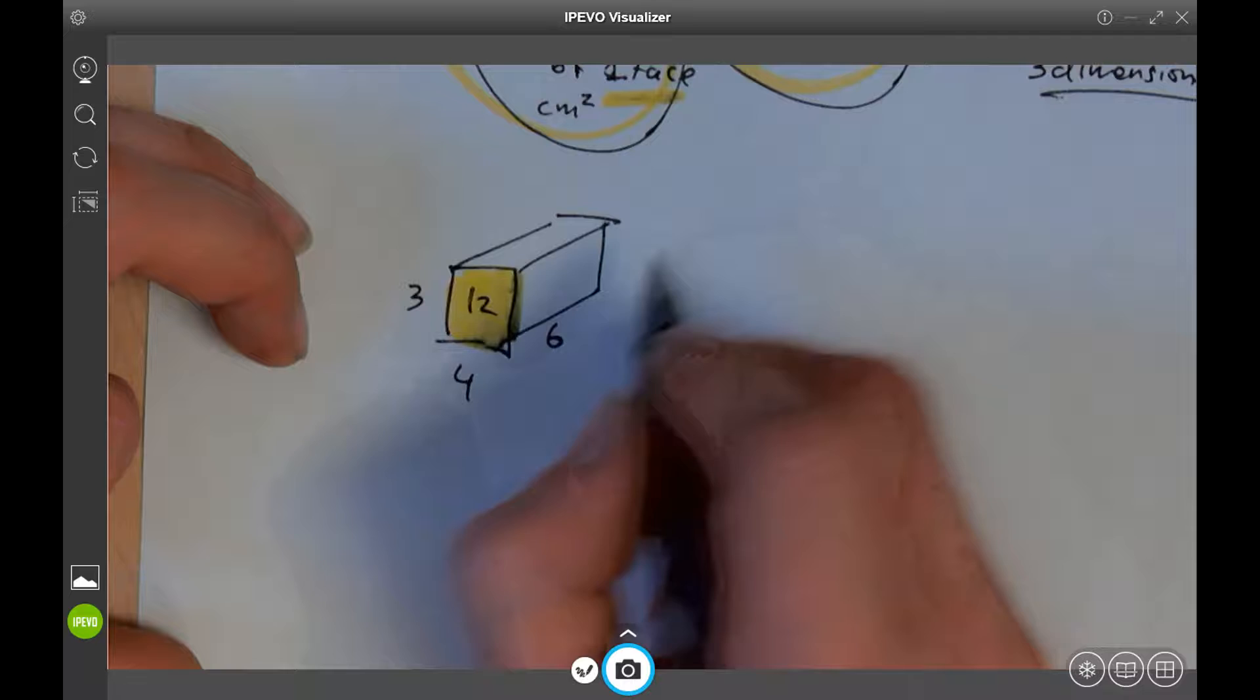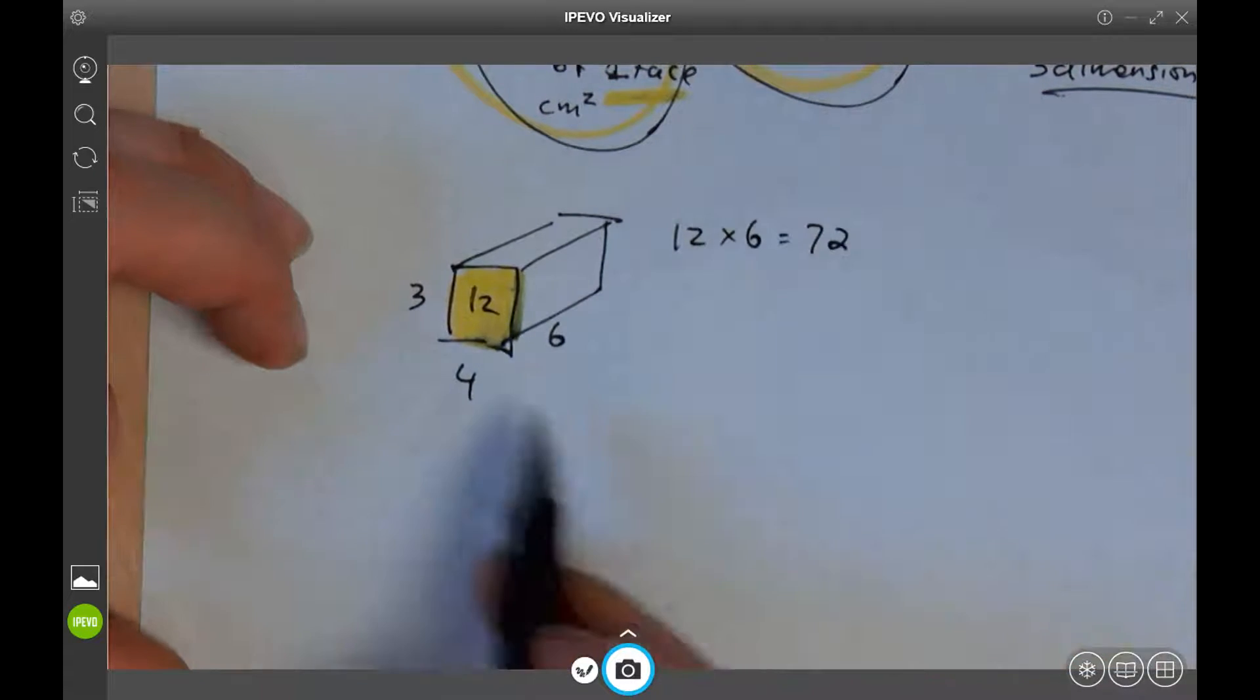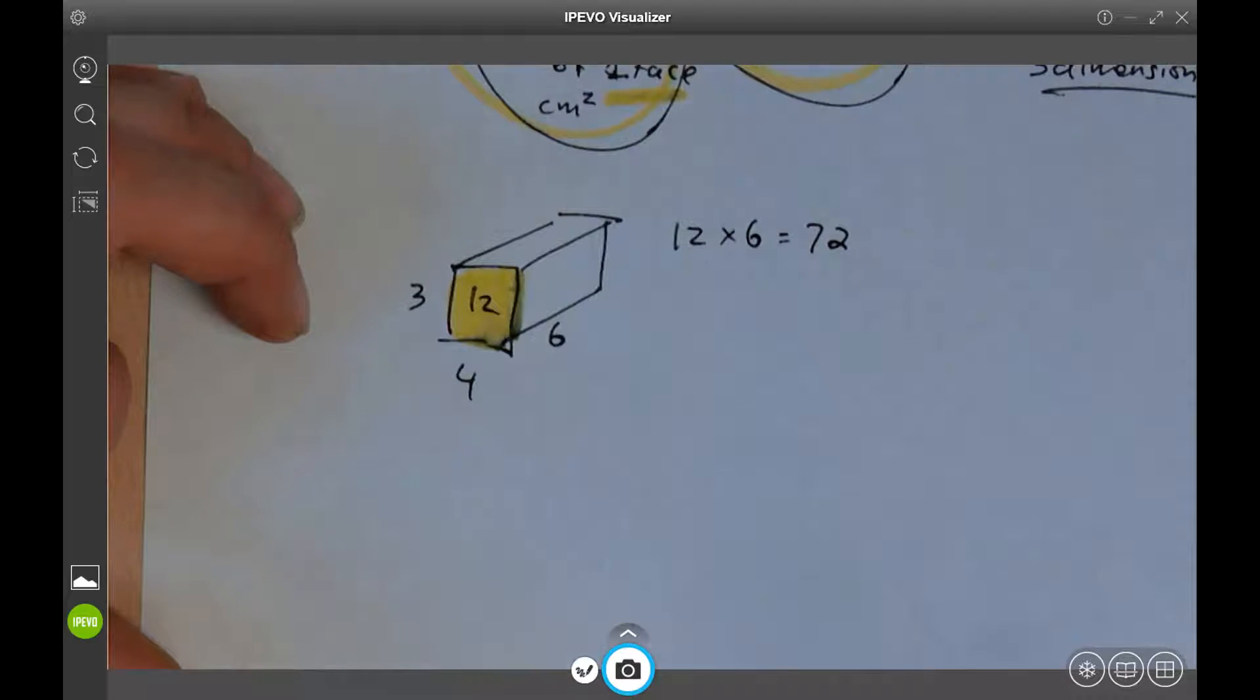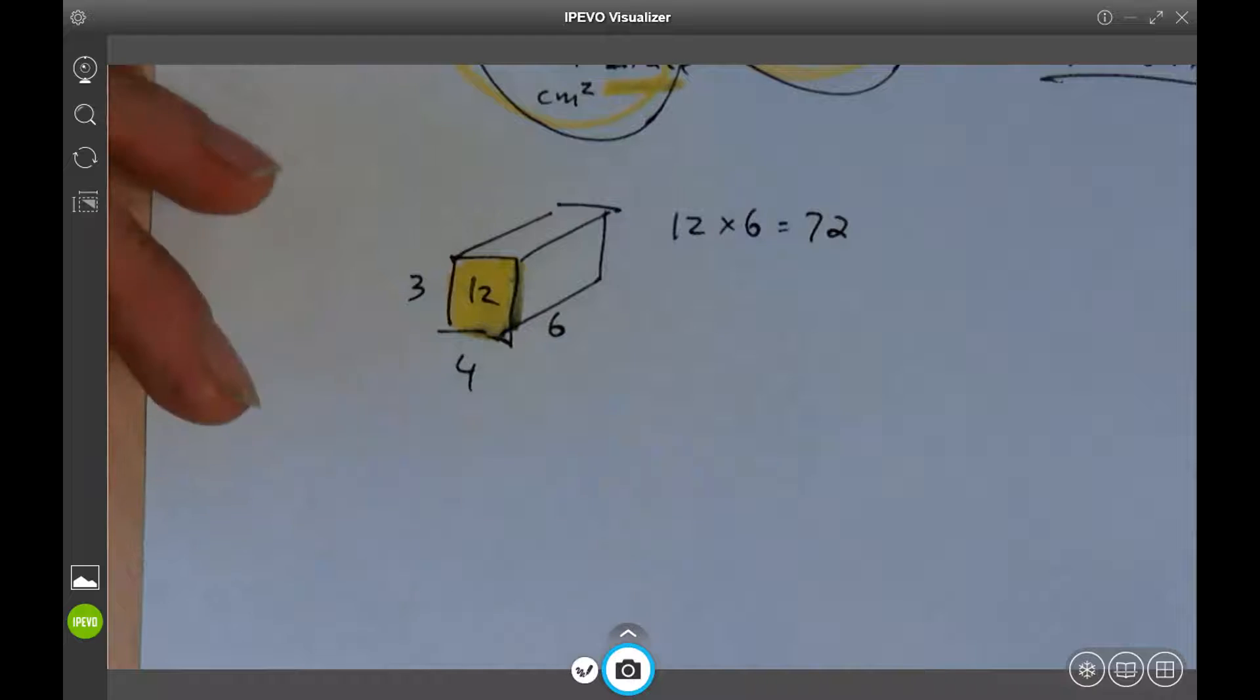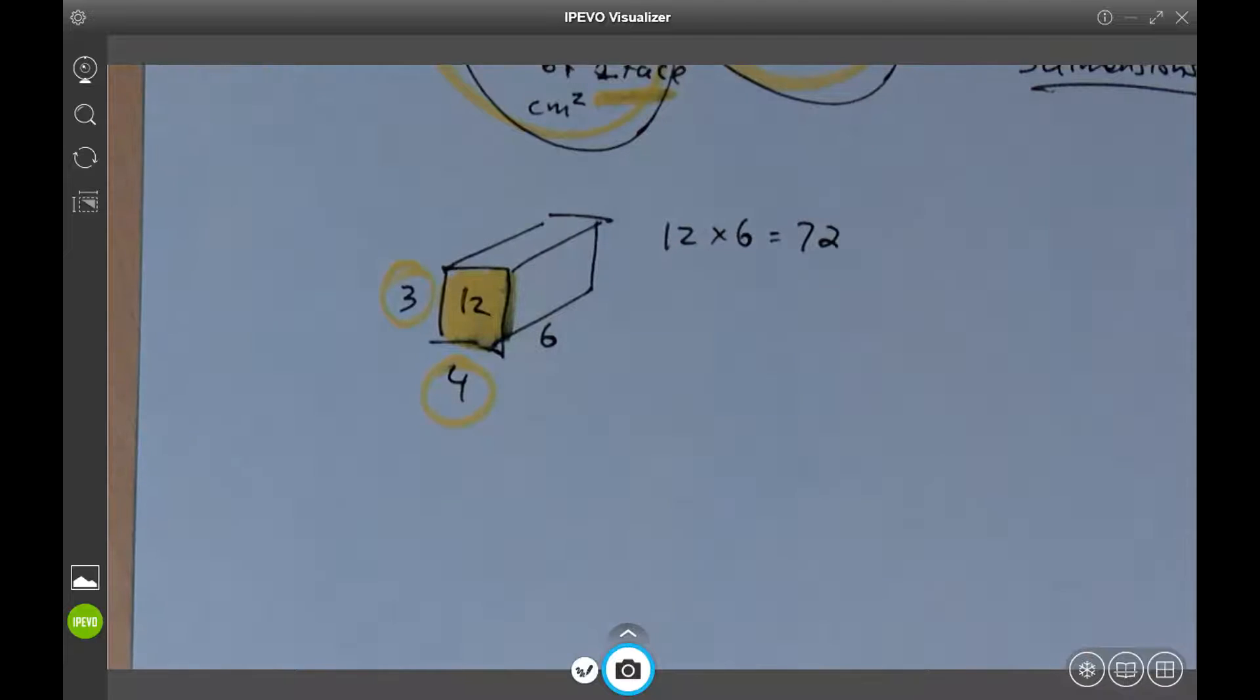72. So 12 times 6 is 72. Well yeah, why didn't you just multiply the numbers together? That would have been way easier. In fact, that's all I did, but I did the face first. I did these first, then I multiplied by 6. Why do I care?